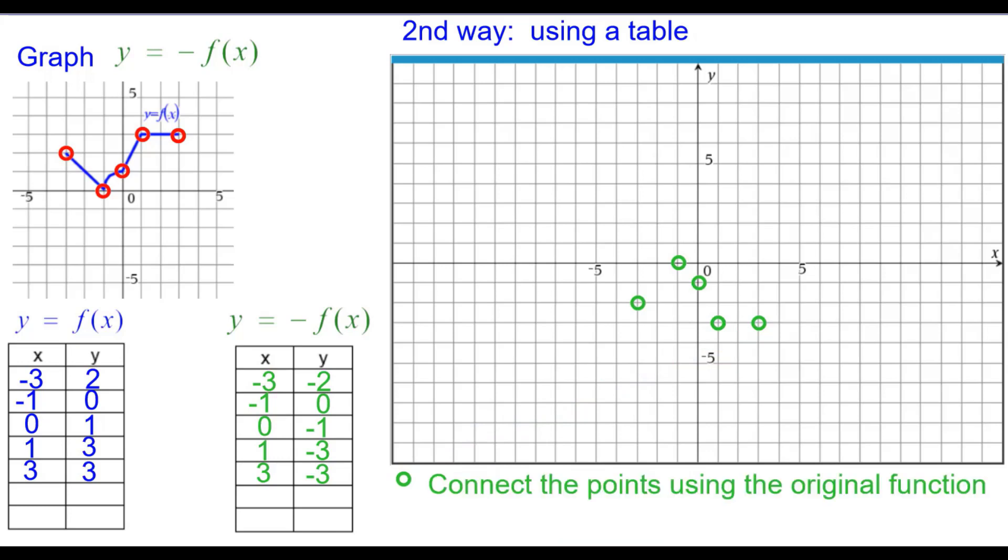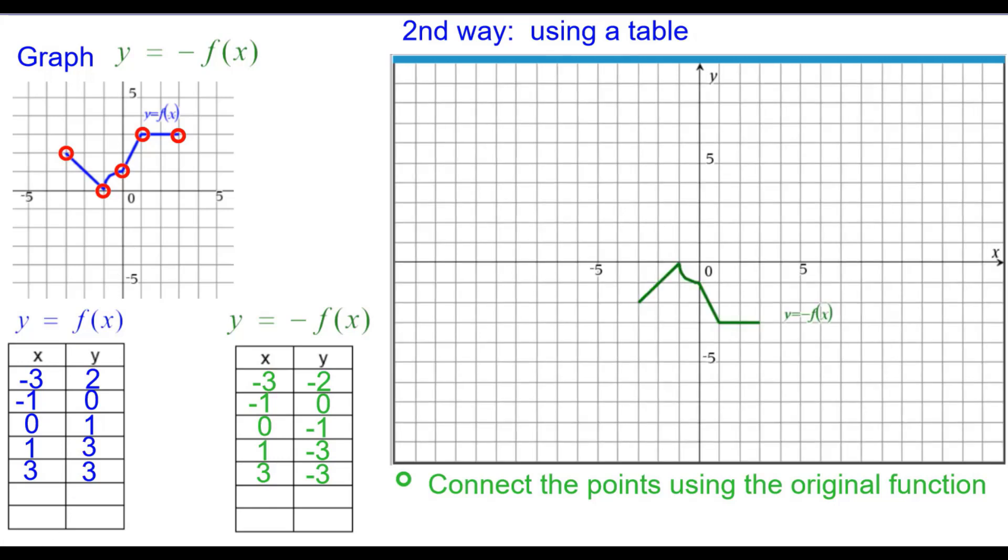And now connect the points using the original function. Again, using straight lines and arcs where I need to. There's the graph of y equals the opposite of f of x.